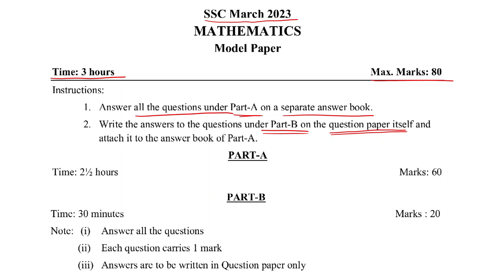Part B is the bit paper. Part B remains the bit paper with paper time is 30 minutes, 20 marks score. Each question carries 1 mark. That is total 20 marks, 20 questions.